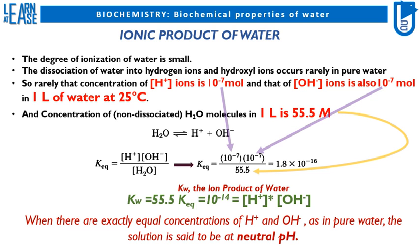This signifies that when there are exactly equal concentrations of H plus ions and OH minus ions, as in pure water, the solution is said to be at neutral pH.